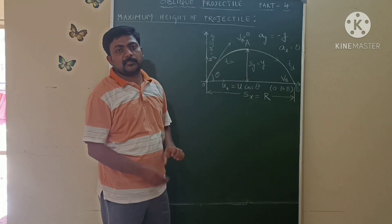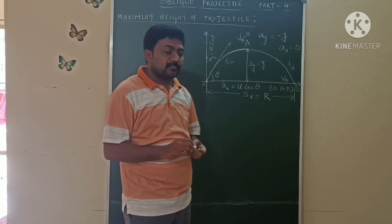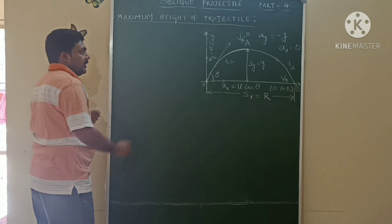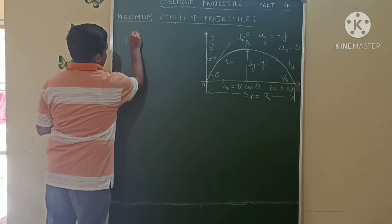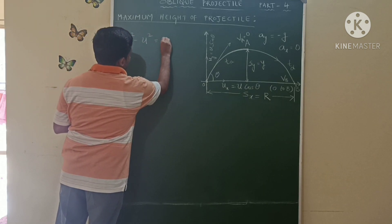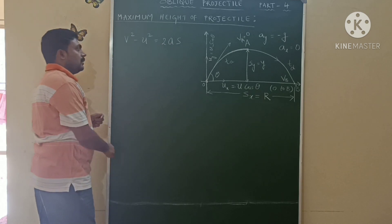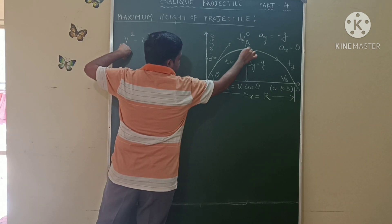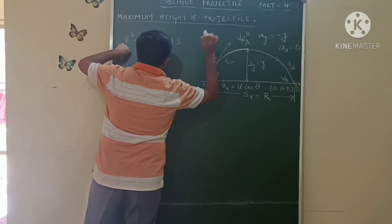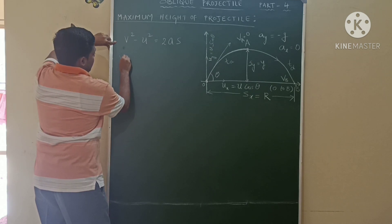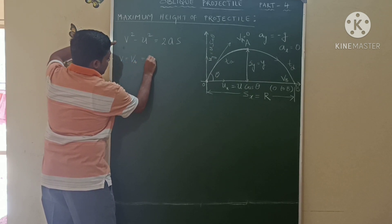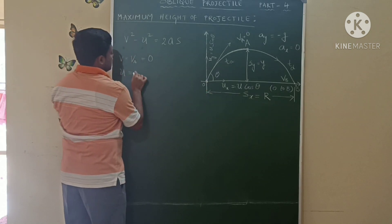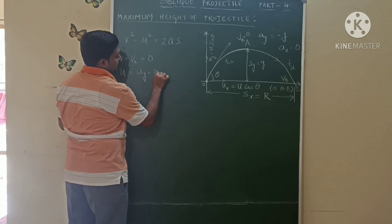So the height attained by the projectile where the velocity is zero is called maximum height — that is the maximum vertical displacement. To derive maximum height I will take one of the equations of kinematics: v² − u² = 2as. The starting point is O, final point is A. At point A, velocity v is zero, and u is the velocity at the starting point, that is u sinθ.